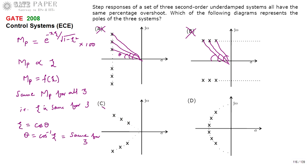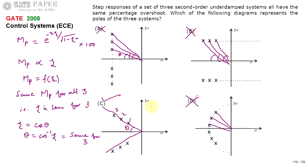For option C, the theta value is the same for all three systems — first system, second system, and third system all have the same theta value. Same theta means same percentage overshoot, so C is the right answer. For option D, you again get different theta values, so D is also not correct. The right answer for this question is C.